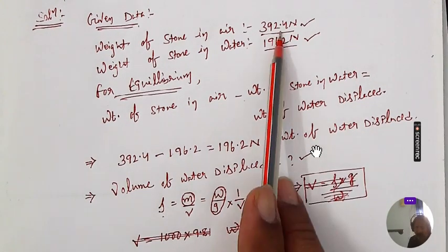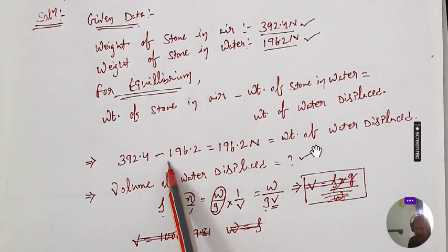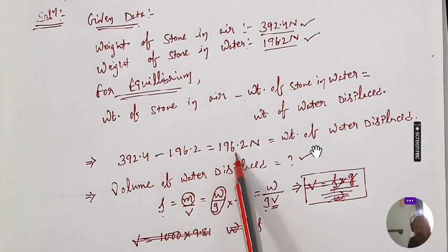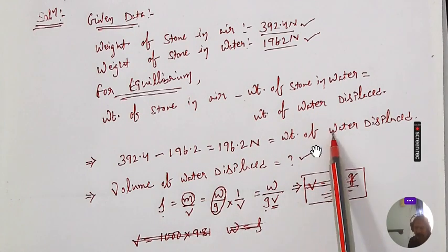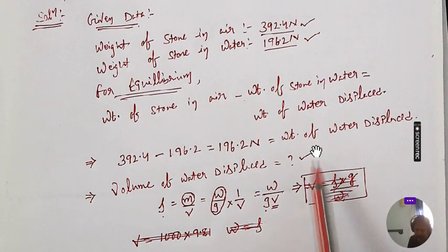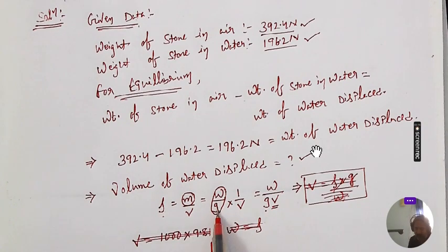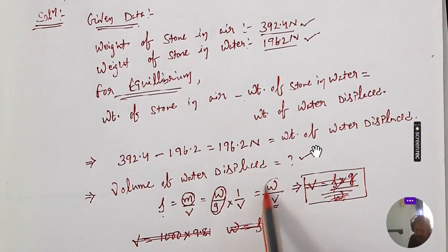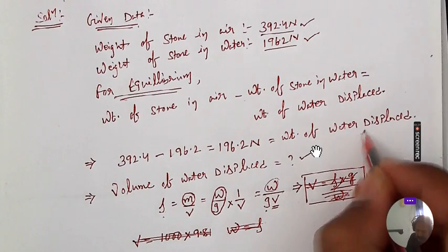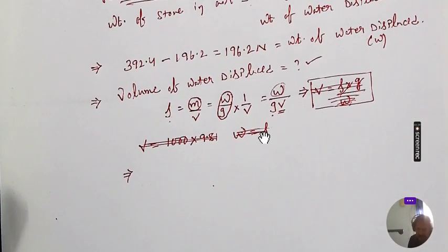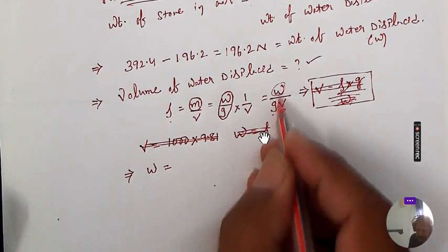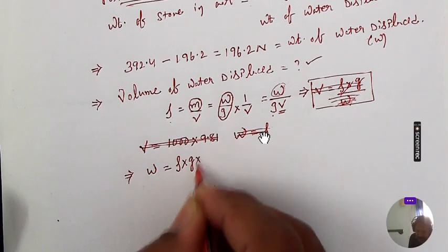The weight of the stone in air is 392.4 Newton and the weight of the stone in water is 196.2 Newton. Subtracting these gives 196.2 Newton, which is the weight of the water displaced. Using the formula: rho equals mass by volume, and mass equals weight by g, we get W equals rho times G times V. Here W is the weight of the water displaced.